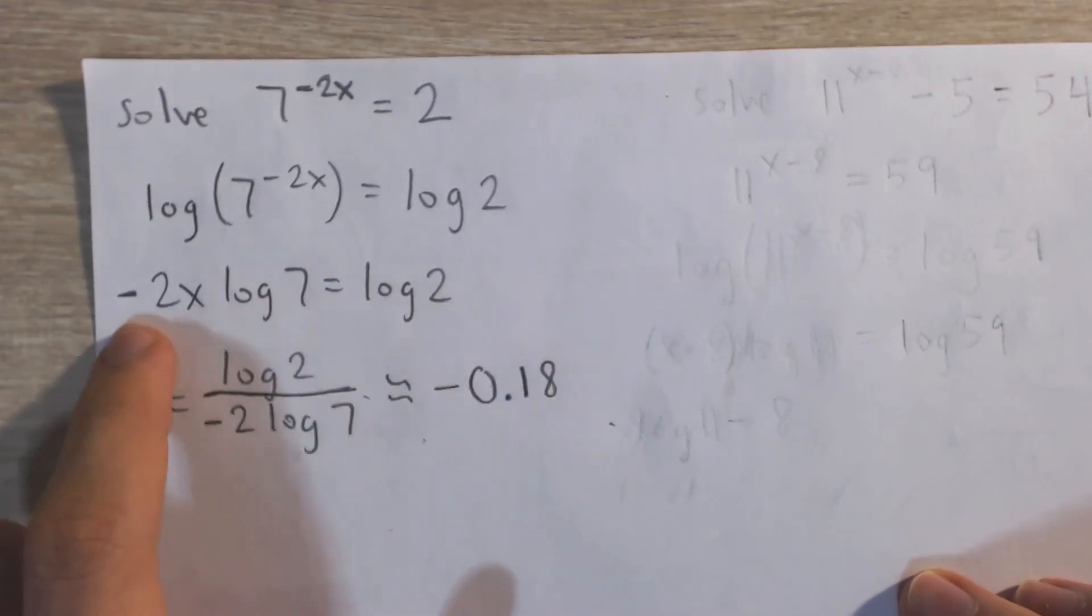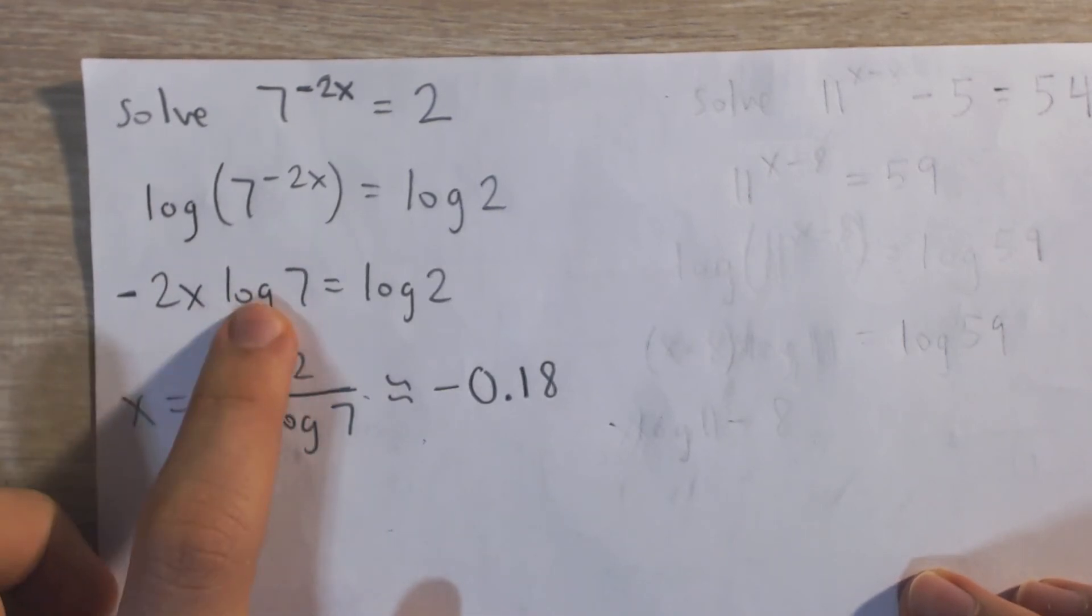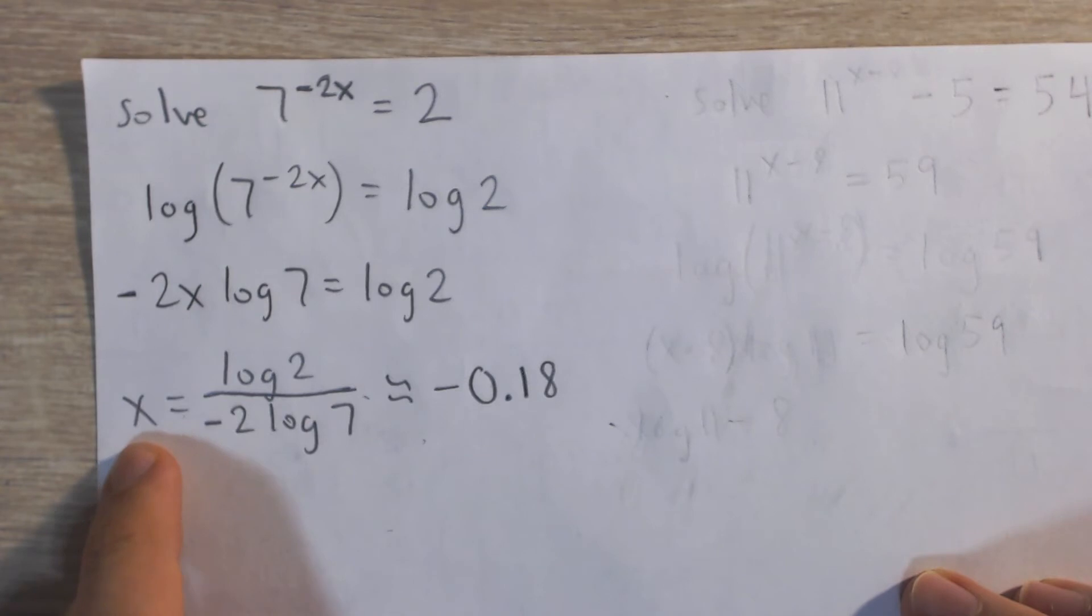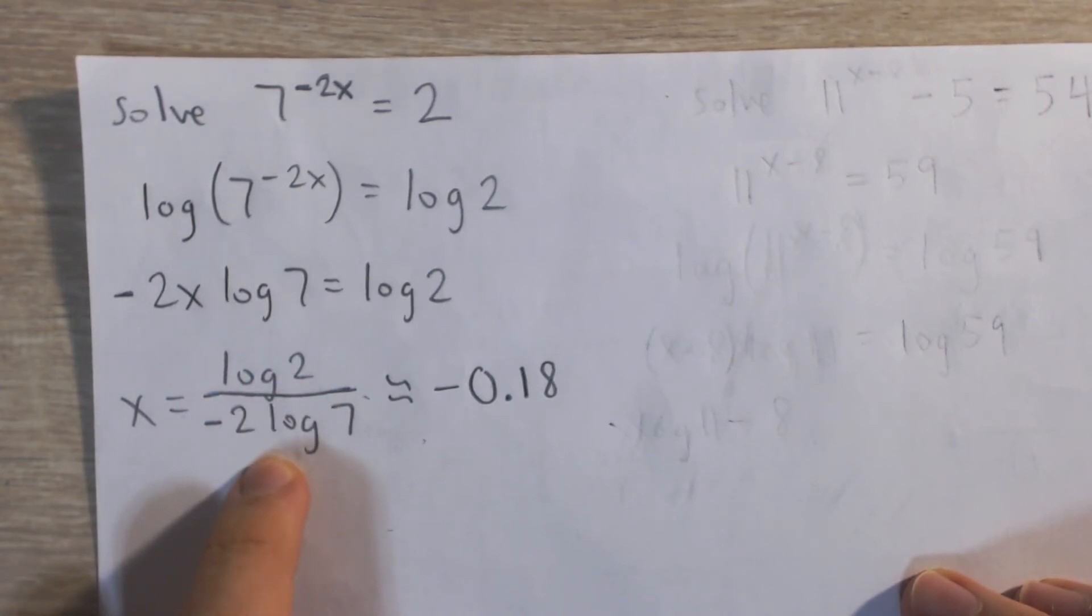I'm going to divide both sides of the equation. I'm trying to isolate x, divide both sides by negative 2 and log 7. And so I get x equals log 2 divided by negative 2 log 7.